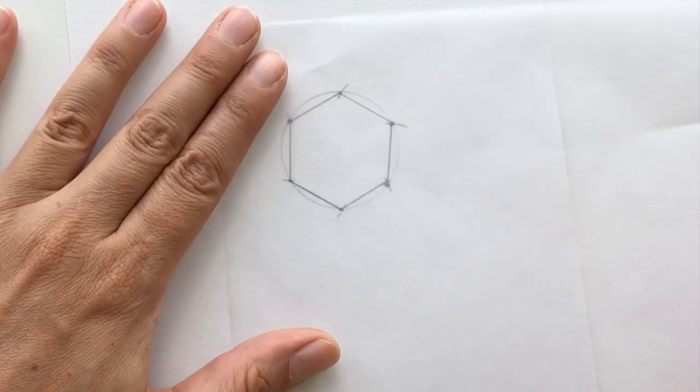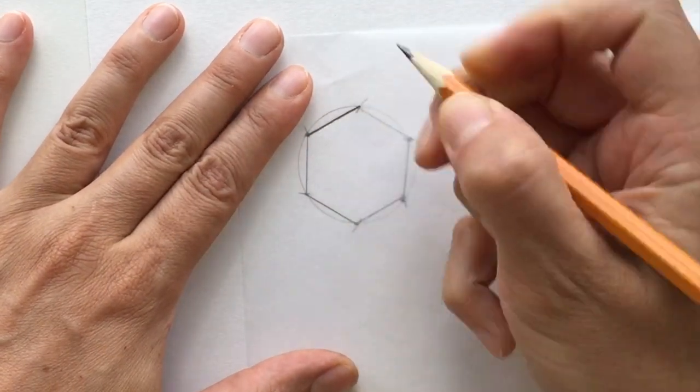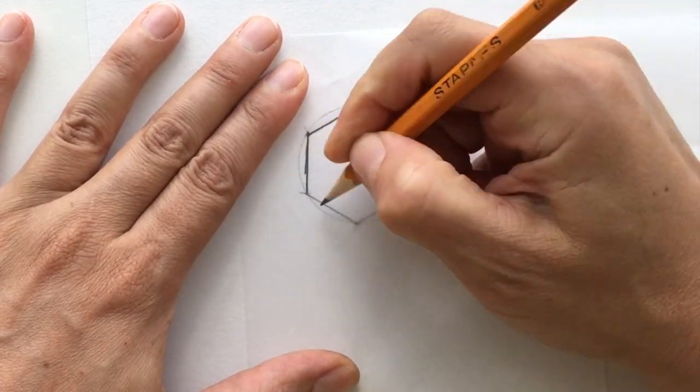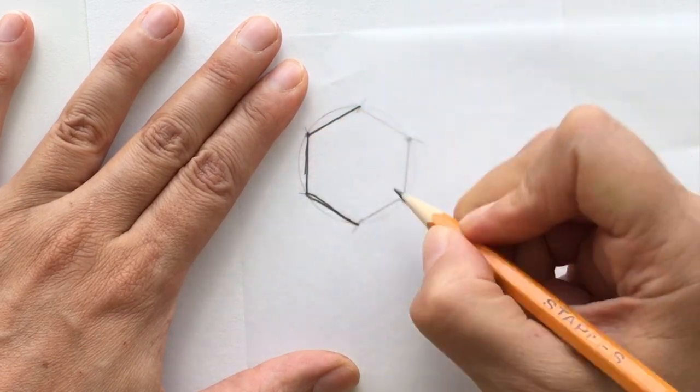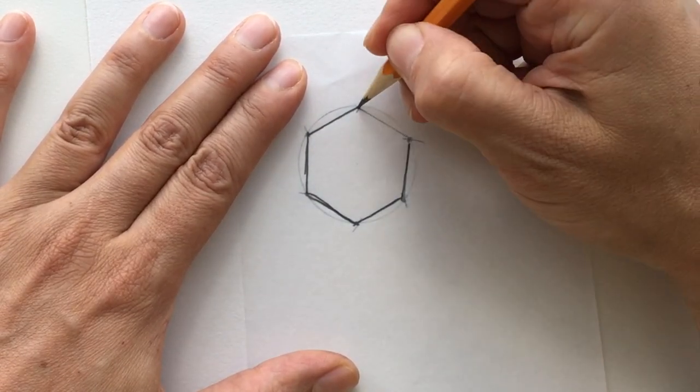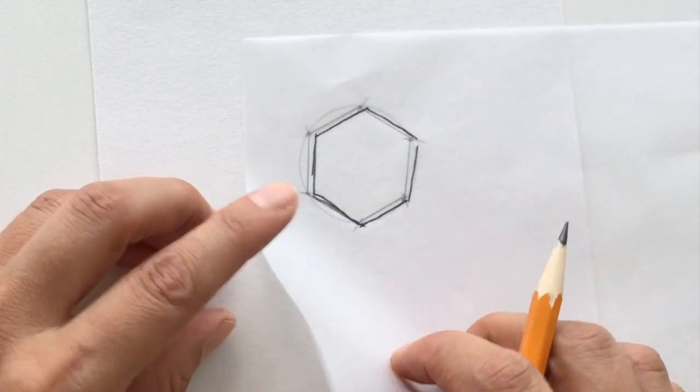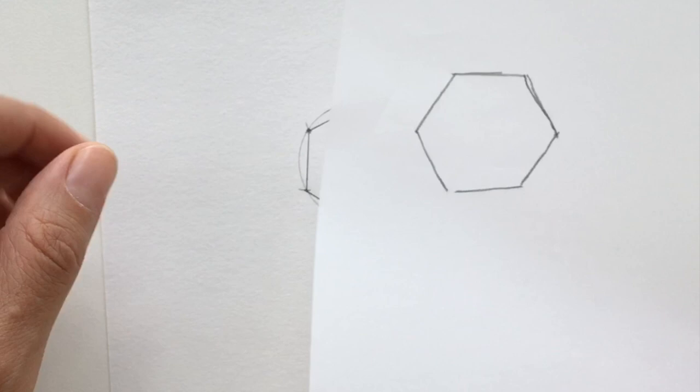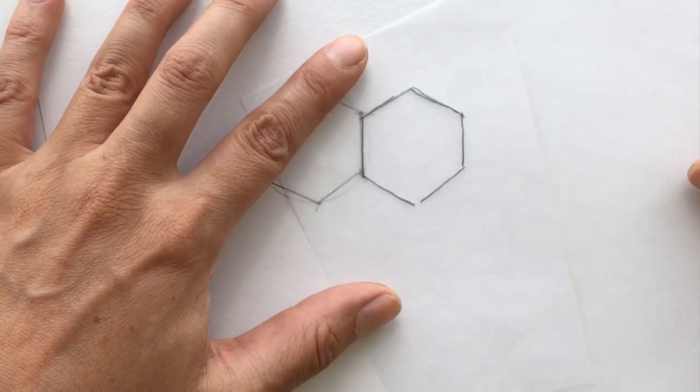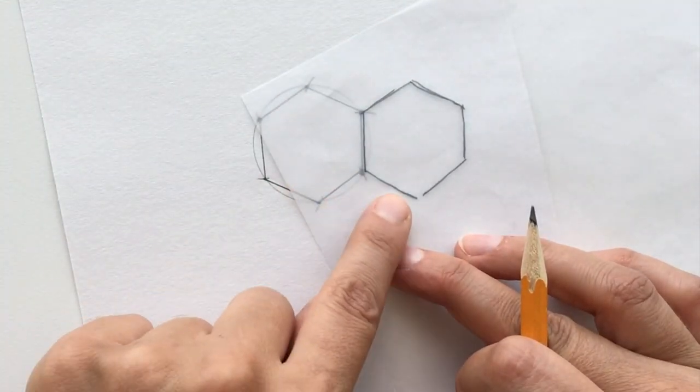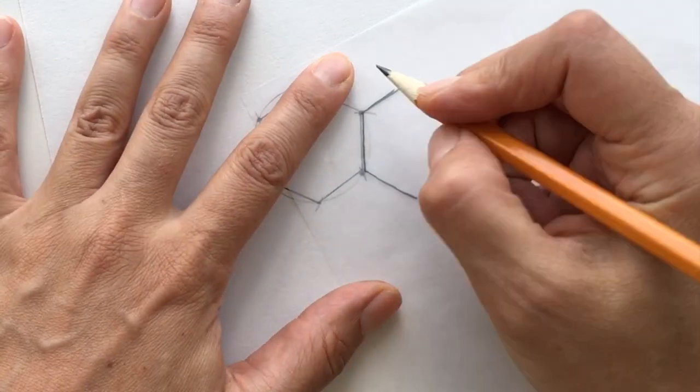Place the transfer paper on top and trace the outline of the hexagon. Flip the transfer paper over, place it back over the first paper so the hexagons are touching, and retrace.